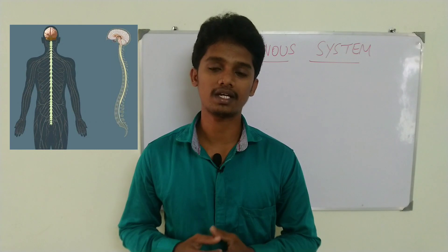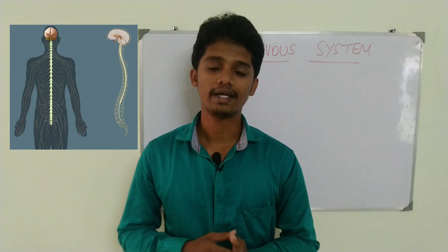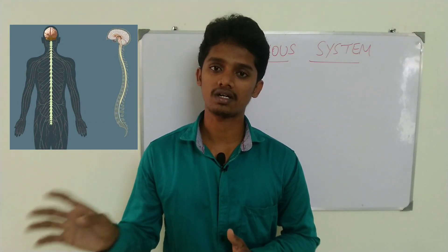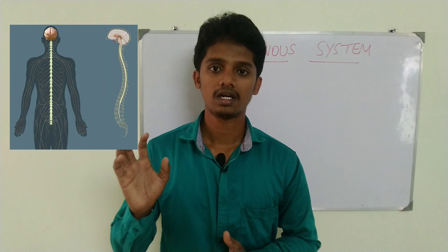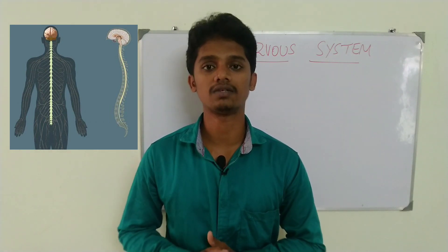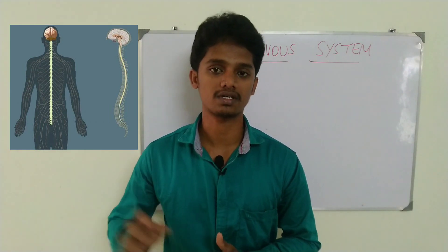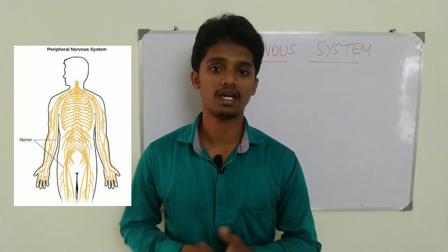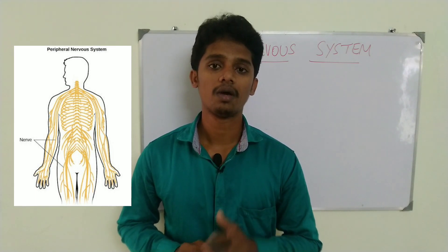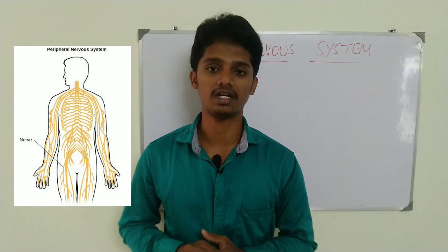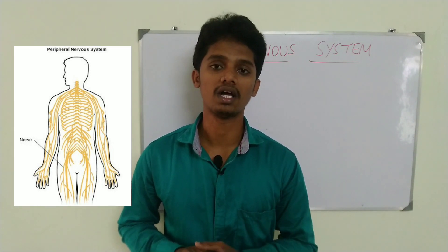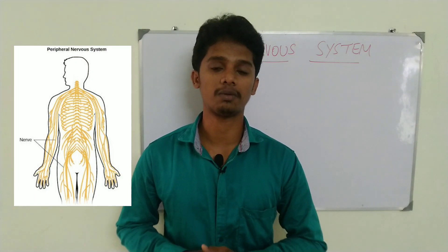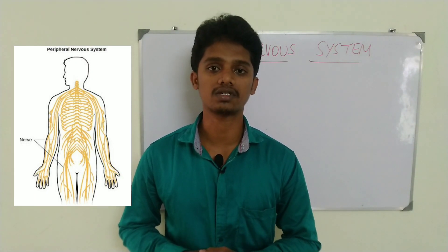What is the Central Nervous System? It is the study of the Brain and Spinal Cord. If you study the Brain and Spinal Cord, you will learn about Neurotransmission. That is the Central Nervous System. The second one is the Peripheral Nervous System. Peripheral means outside of the CNS.